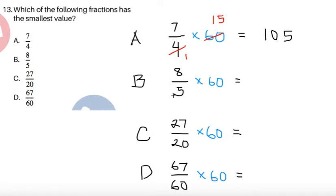For 8 fifths times 60, cancel the 5 and 60. 5 divided by 5 is 1, 60 divided by 5 is 12. So 8 times 12 equals 96. 27 over 20 times 60: after cancellation, 27 times 3 gives us 81.